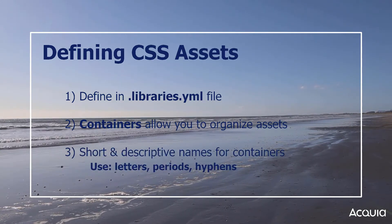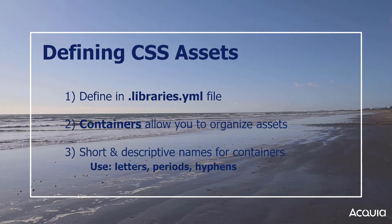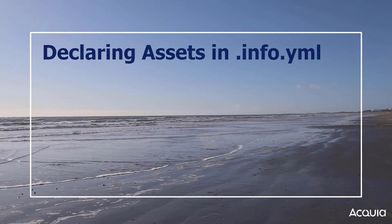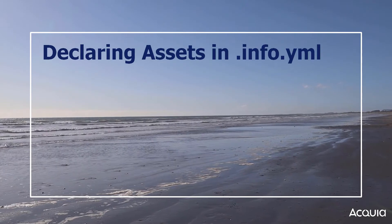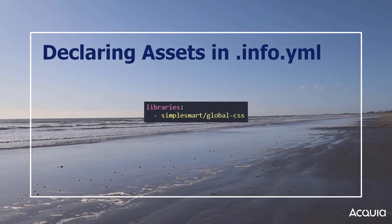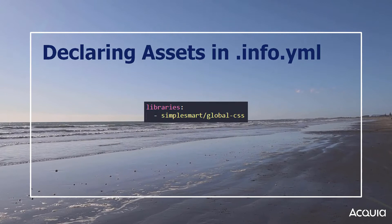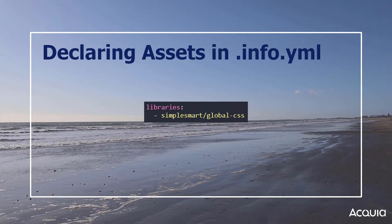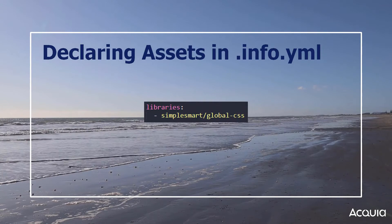When selecting a name for a container, it's best to keep it short and descriptive. You can use periods and hyphens in the name as well as letters. A common container you may come across is called global-css. Once you add an asset library, you must tell Drupal about it in your theme's info.yaml file. You use the same procedure whether you are adding CSS assets or JavaScript assets. Within a library's key, you have the machine name of your theme and the second part is the container name. So for this example, simplesmart is the machine name of our theme, and global-css is the name of the container that is defined in simplesmart.libraries.yaml. Adding an asset library into simplesmart.libraries.yaml makes it load for all pages using your theme.